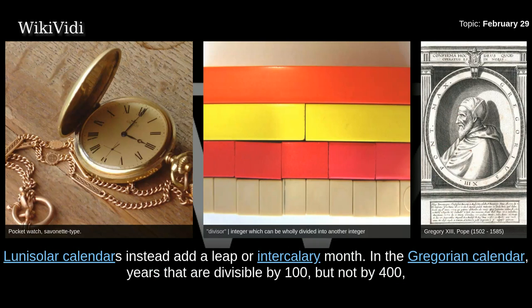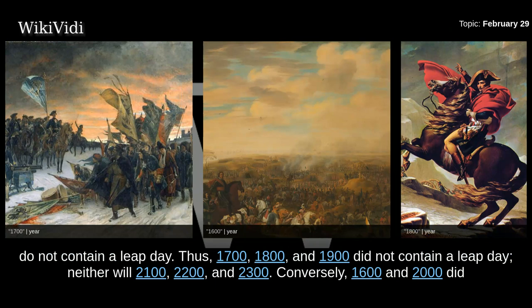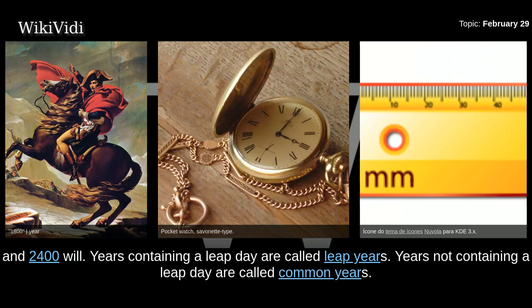Lunisolar calendars instead add a leap or intercalary month. In the Gregorian calendar, years that are divisible by 100 but not by 400 do not contain a Leap Day. Thus, 1700, 1800, and 1900 did not contain a Leap Day — neither will 2100, 2200, and 2300. Conversely, 1600 and 2000 did, and 2400 will. Years containing a Leap Day are called Leap Years; years not containing one are called Common Years.